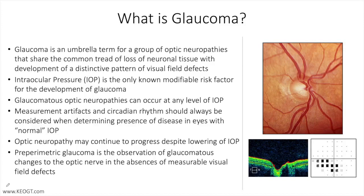And you can see this here by example. The axons travel into the area of the nerve and do so in a characteristic pattern, curving into the area of the optic nerve. This creates a neuroretinal rim that you can see here around the optic nerve, as well as the cup, which I'm circling here.